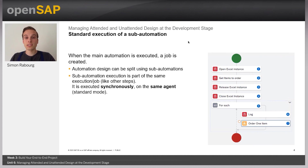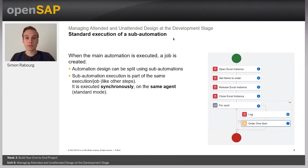First, we have to remind what is the standard execution mode for a sub automation. Let's say you have designed an automation that you want to reuse inside another automation — let's call that the sub automation. When the main automation is executed, the job will be created. The automation design can be split using sub automations, but the sub automation execution will be part of the same execution job as the parent one, like any other steps of the parent automation.